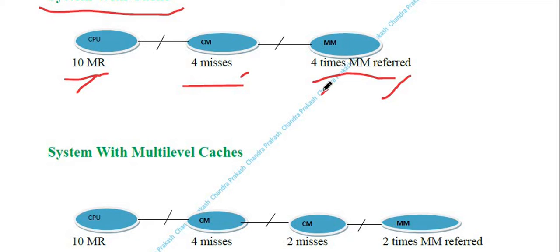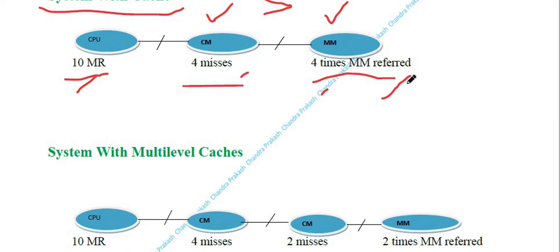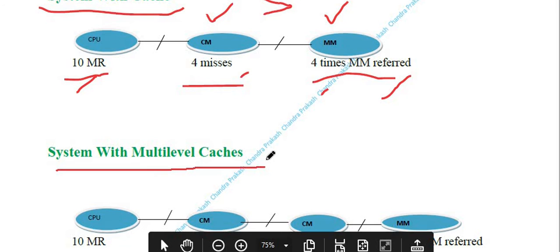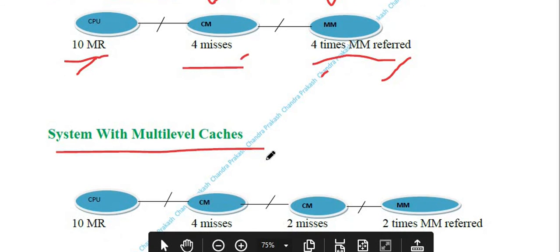In this case, system performance is enhanced because the working speed of cache memory is higher than the working speed of main memory. Out of 10 requests, 6 are fulfilled by cache memory and 4 by main memory, so the average memory access time is lower. System performance is therefore enhanced with a single cache.